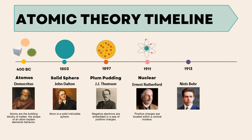Niels Bohr in 1913 introduced the planetary model, describing electrons restricted to circular orbits with different energy levels.